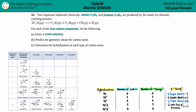We also need to predict the geometry about each carbon atom and determine the hybridization of each type of carbon. We'll take it step by step for all four carbon compounds, going left to right. For organic hydrocarbons, the easiest approach is to string the carbons together first, since hydrogen can never be in the middle of a compound.